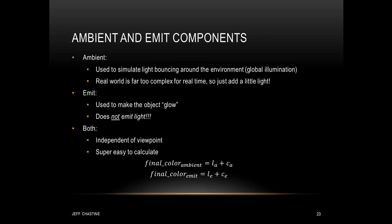We still have two components to talk about. We have ambient and emit. And remember that ambient lighting is used to simulate global illumination, because real world lighting is far too complex for real time. And we also have emit, which is used to make the object glow, but again remember that emit does not actually emit light. Now both of these components are independent of the camera's viewpoint, and they're also super easy to calculate, because we can just add the ambient and emit components like you see here.